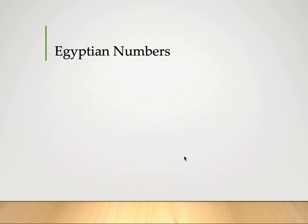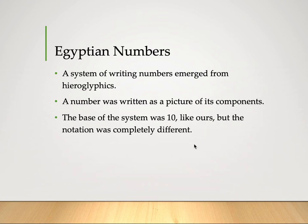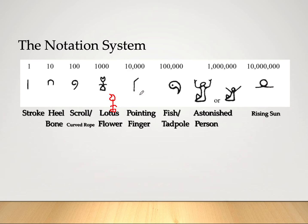Now let's look at Egyptian numbers. In Egypt, a system of writing numbers emerged from the hieroglyphic system. A number was written as a picture of its components. The base of the number was 10 — decimal like ours — but the notation was completely different. Here are the symbols: 1 is a stroke, 10 is the heel bone (an inverted U shape), 100 is a scroll, 1,000 is a lotus flower — sometimes drawn simply or with more detail.